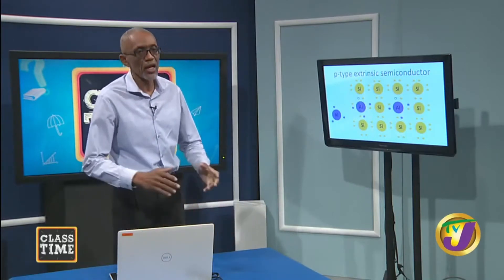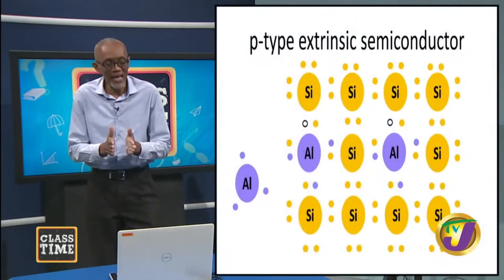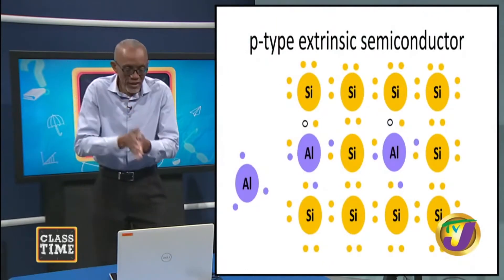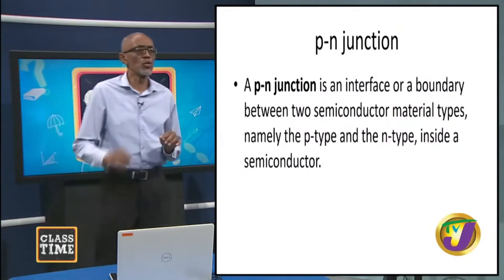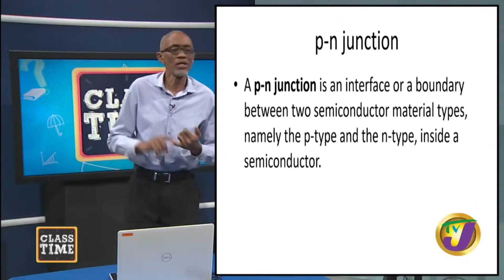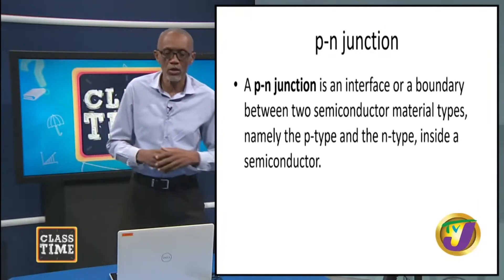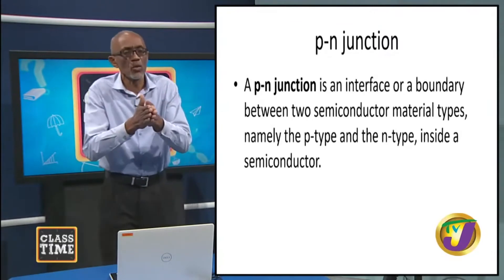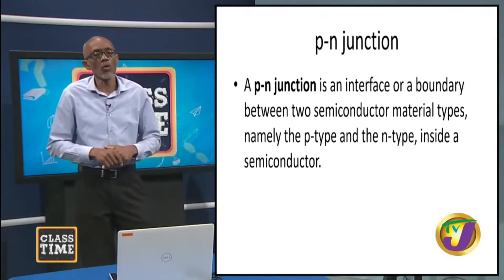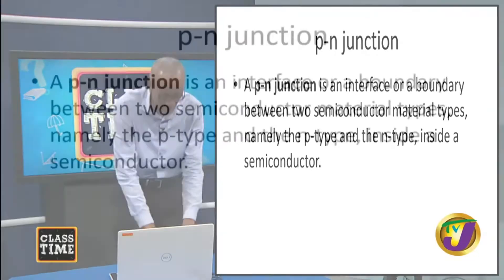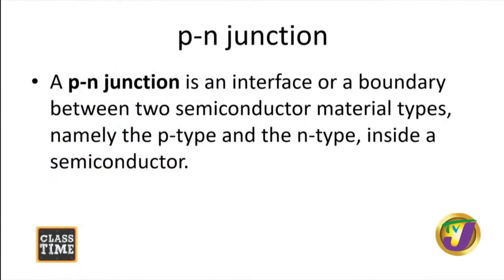So now, what is this thing about a PN junction? A PN junction suggests bringing P-type and N-type materials together at some junction. A PN junction is an interface or boundary between two semiconductor material types — namely the P-type and the N-type — inside a semiconductor. In theory, we just bring two pieces of P-type and N-type together to see what would happen. But when this is done practically, you have one piece of semiconductor material that is selectively doped.